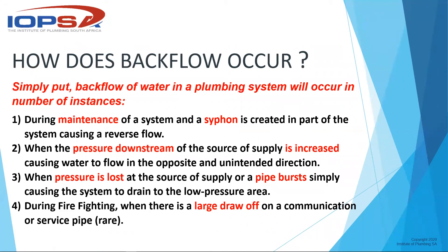How would backflow occur? The municipality is normally pushing water towards us, but water flows to an area of lesser pressure to equalize the system. If the municipality cuts the water supply due to maintenance or a burst pipe, that creates a reduced pressure scenario and water from our installation can flow back. Alternatively, if we increase the water pressure at our installation with a pressure pump, our pressure becomes higher than upstream, and water can flow back in that direction too.